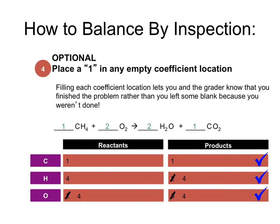When you are finished balancing an equation, something that you can do to let the grader know that you are finished is placing a 1 in any empty coefficient location, as seen here. This is purely optional — you can leave them blank. Just beware that you should never start balancing a problem by putting a 1 in the coefficient. This is something that you do at the end of the balancing process.